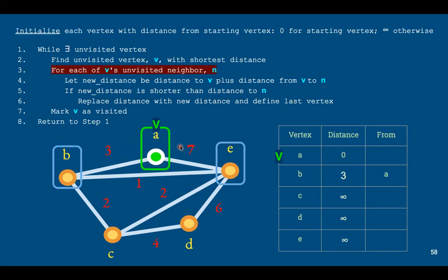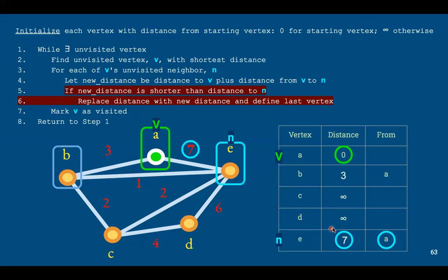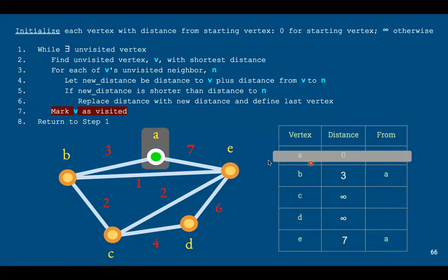We go to the next neighbor, E. We do the same thing. New distance is the distance to the starting vertex plus the distance between the vertex and its neighbor, seven. If the sum is less than the current value, which is infinity, then we replace the current value with seven and give it a from vertex. Now go back, run it again. It's out of vertices, so we mark A as visited with these gray boxes, and we go back to the top of the while loop.